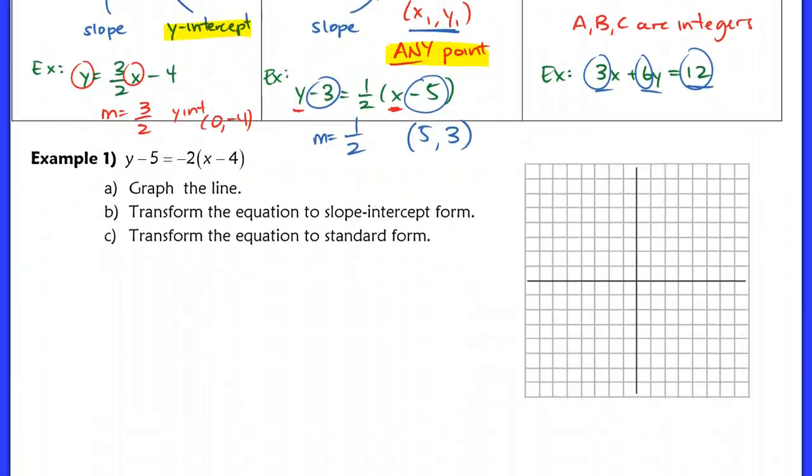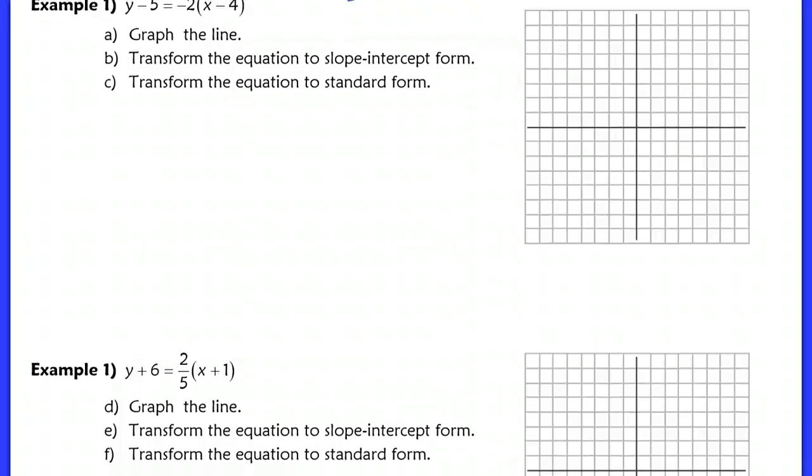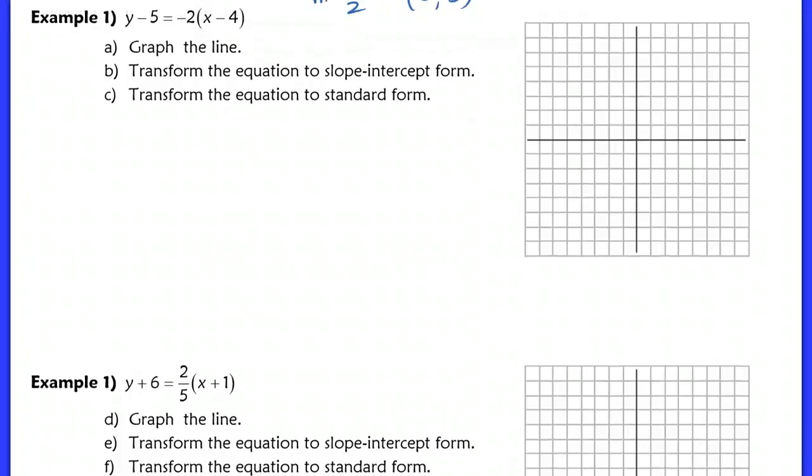You're going to be responsible for being able to graph in point-slope form as well as all the other forms. So you already probably know how to graph in standard form, because we're going to use x and y intercepts, which is what we've been doing the past couple days. And you're probably familiar with slope-intercept form already. So the last one we're going to learn is point-slope form. You must make sure you understand how to do each and every single type of graphing.